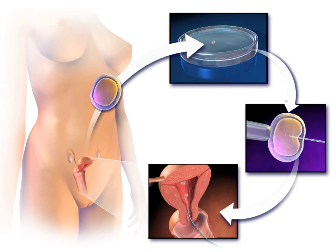Egg donors are resources for women with no eggs due to surgery, chemotherapy, or genetic causes, or with poor egg quality, previously unsuccessful IVF cycles, or advanced maternal age. In the egg donor process, eggs are retrieved from a donor's ovaries, fertilized in the laboratory with the sperm from the recipient's partner, and the resulting healthy embryos are returned to the recipient's uterus.